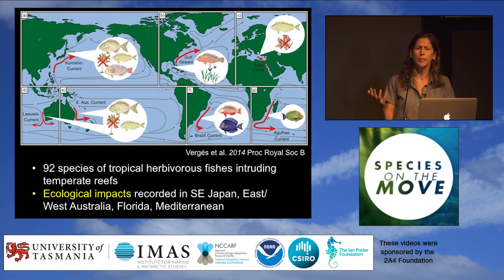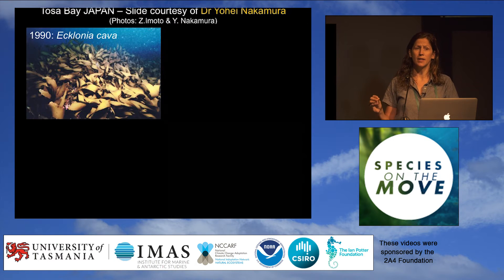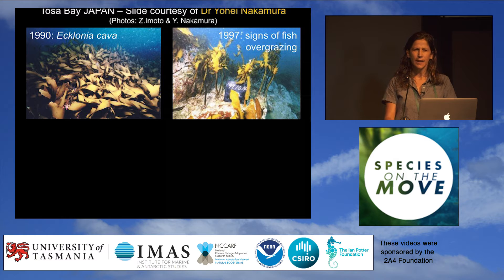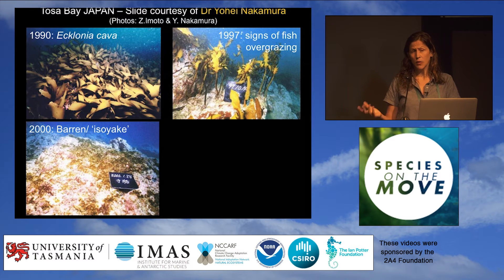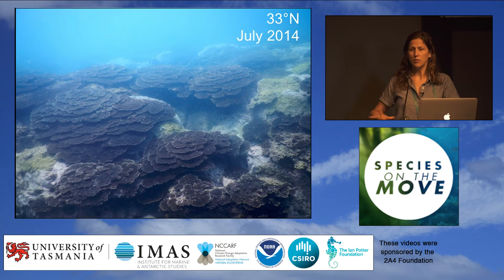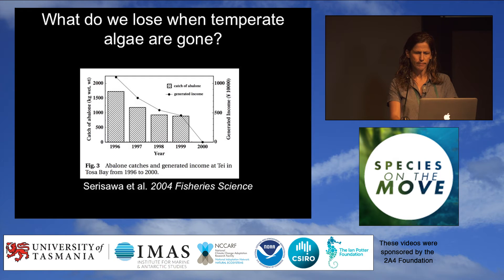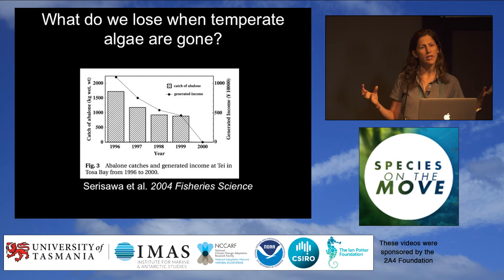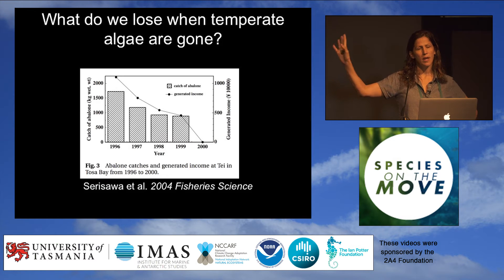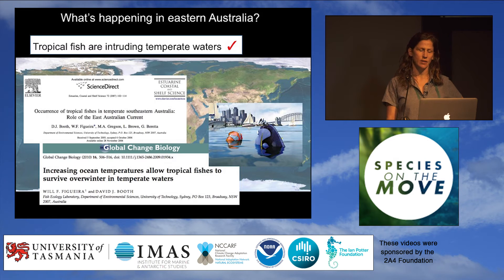Possibly the most photogenic and extreme example of what I call tropicalization happened on the south coast of Japan in a place called Tossa Bay. It used to be dominated by kelp in the 1990s, but by the late 1990s these kelp forests were overgrazed by fish, and by 2000 it was a complete barren. By 2013 it was largely dominated by fast-growing Acropora corals — a full tropicalization of the system. When we lose this kelp we lose all the species associated with it, including economically important species like abalone. The abalone fishery in Tossa Bay completely collapsed as a result of the kelp disappearing.